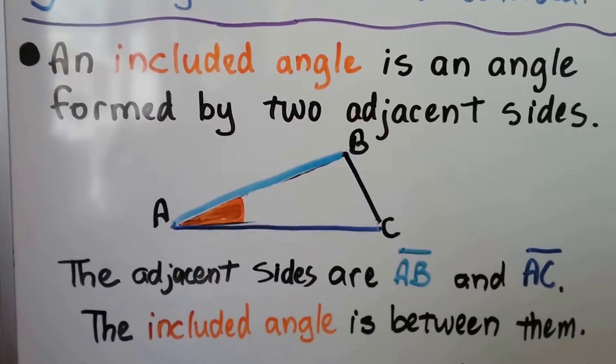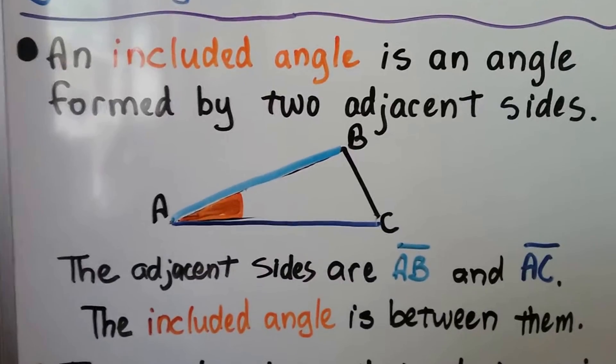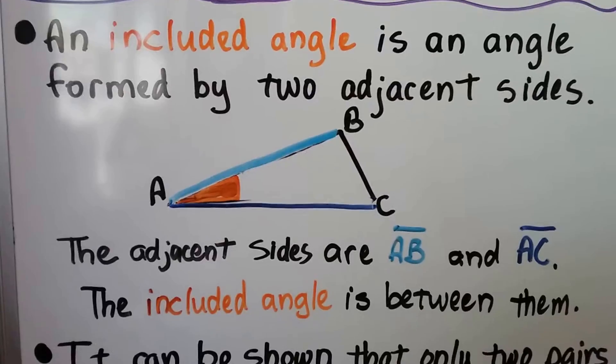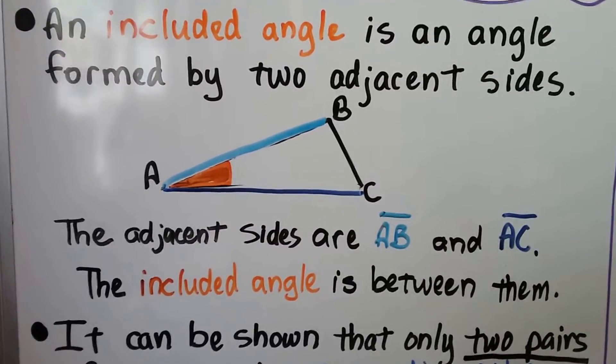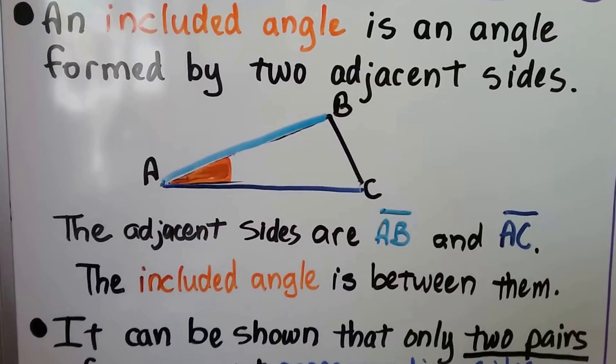We learned this in the last video. An included angle is an angle formed by two adjacent sides. The adjacent sides are segment AB and segment AC. The included angle is in orange and it's between them.